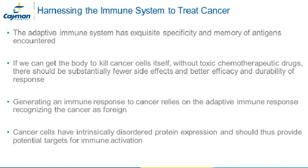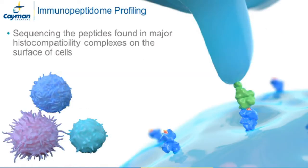An important principle that makes immunotherapy to cancer possible is the intrinsically disordered protein expression of cancer cells, which can result in the adaptive immune response identifying cancer cells as foreign. We can identify these disordered protein signatures that stimulate the adaptive immune response by sequencing the peptides found in the MHC complexes for recognition by T cells.